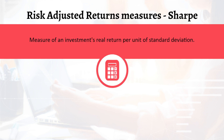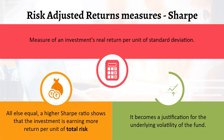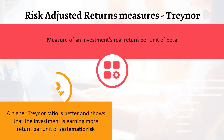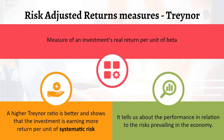The Sharpe ratio is a measure of an investment's real return per unit of standard deviation. It tells us whether the fund is yielding extra returns for the extra risk taken. The Treynor ratio is a measure of an investment's real return per unit of beta, and a higher Treynor ratio is better, showing that the investment is earning more return per unit of market risk.